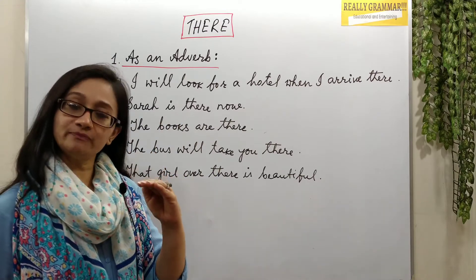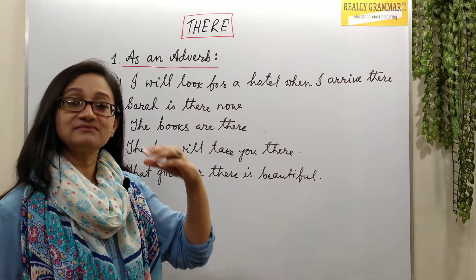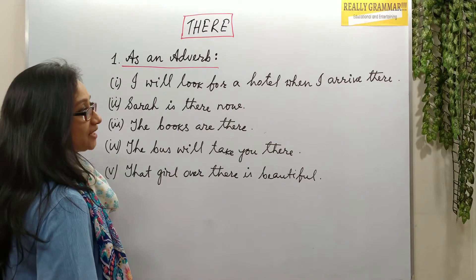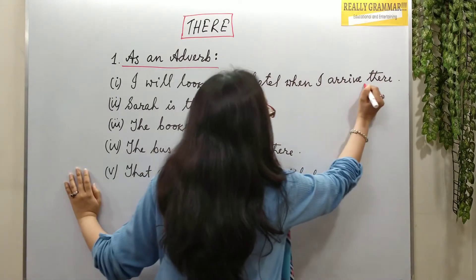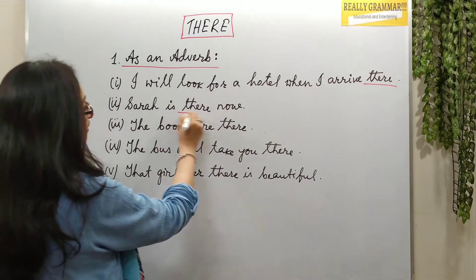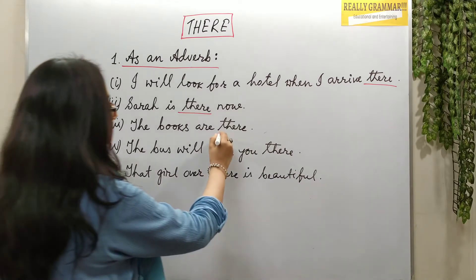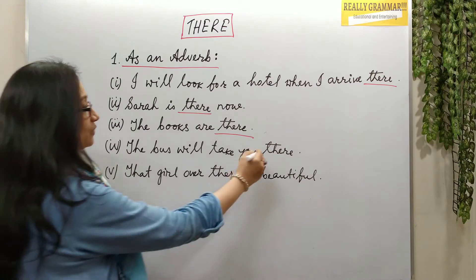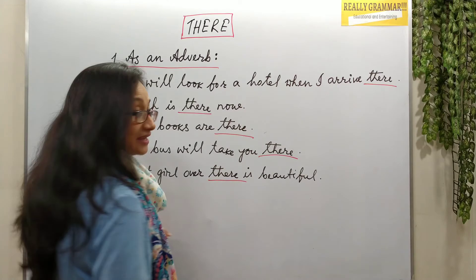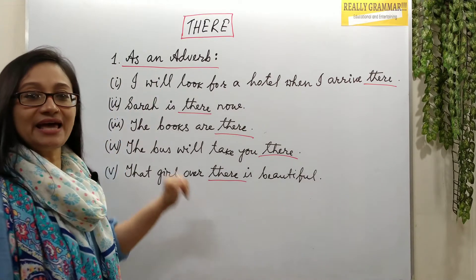Here are some examples of 'there' as an adverb of place: 'I will look for a hotel when I arrive there.' 'Sarah is there now' — means not here. 'The books are there.' 'The bus will take you there.' 'That girl over there is beautiful.'